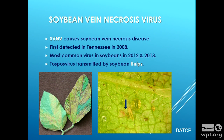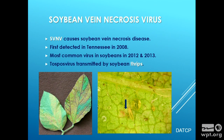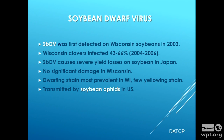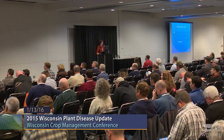Soybean vein necrosis virus was first detected in Tennessee in 2008, and it was our most common virus in 2012 and 2013. It's interesting to see how these populations ebb and flow. In the field it's pretty easy to spot because it has brown necrotic lesions along the veins and yellowing. Soybean dwarf virus, found in 2003, has a reservoir in clover. It's a problem in Japan but has had no significant effect in Wisconsin so far. It is transmitted by soybean aphids, which are persistently feeding aphids. In Wisconsin we have both the dwarfing strain and yellowing strain, but mostly dwarfing strain.